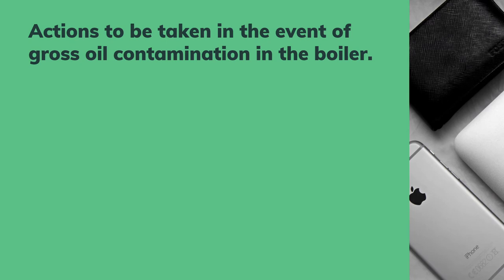We have already seen all the possibilities of where oil can come into the boiler feed water system — to the cascade tank or to the boiler. So if you find oil in the boiler or cascade tank, what actions are to be taken in the event of gross oil contamination in the boiler?